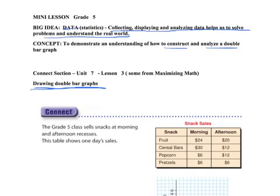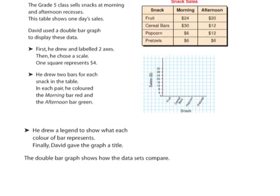Alright, so here we have a grade five class who sells snacks at morning and afternoon recess. This table shows us one day's sale, so snack sales might be more specific to say snack sales on such and such a date. So the different types of snacks, how much money they raised from each. Alright, so he's going to draw a double bar graph to demonstrate this data.